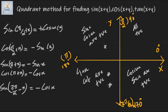Let's take another example: cos(π − x). Since π − x lies in the second quadrant and cosine is negative there, the final answer will be negative. Since the difference is taken from an integral multiple of π, the trigonometric function remains the same. Hence, cos(π − x) = −cos x.